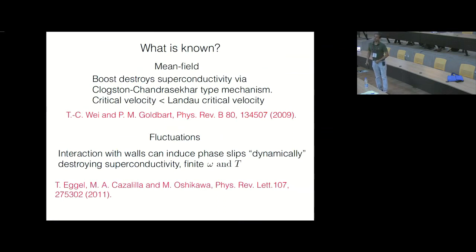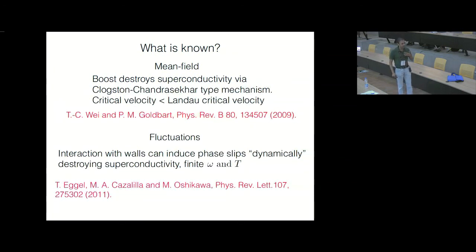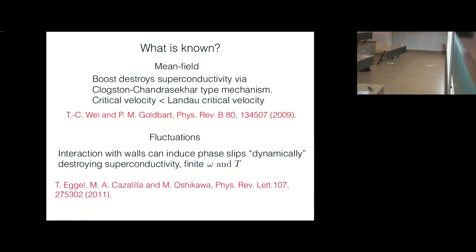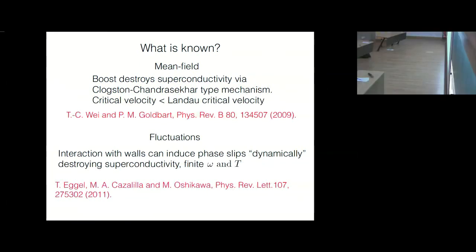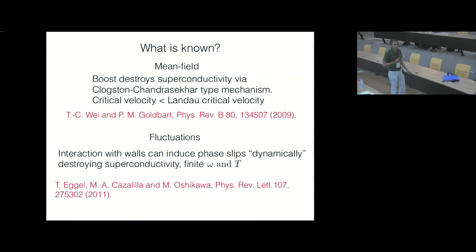So it turns out that this problem was treated at the mean-field level, where you don't worry about the fact that there is no long-range phase coherence — you just take into account explicitly the fact that you are in one dimension — and it was shown that a boost does destroy superconductivity, but via a mechanism which is a little different from the way you normally encounter such destruction in Bogoliubov theory. This is via a mechanism called the Clogston-Chandrasekhar type mechanism. So the traditional Clogston-Chandrasekhar mechanism has to do with how superconductivity is destroyed when you apply a magnetic field, from the Zeeman effects of the magnetic field.